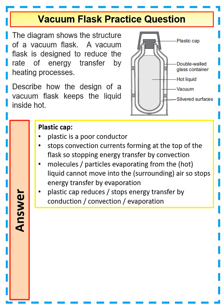So the first thing that you can talk about is a plastic cap. Plastic is a poor conductor, so because it's a poor conductor, heat won't conduct through it. The cap stops heat leaving by conduction and convection. So it's stopping heat being lost through the top.